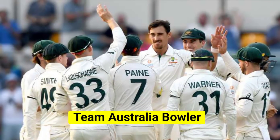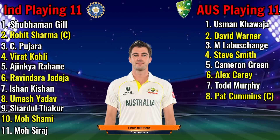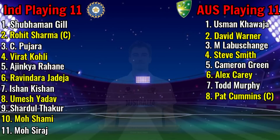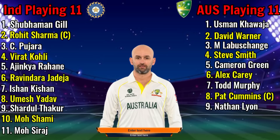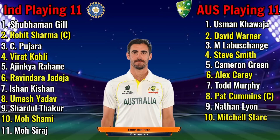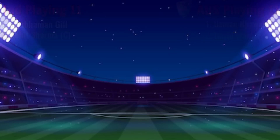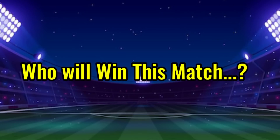Team Australia bowlers: Number 8, Pat Cummings, right-hand fast bowler; Number 9, Nathan Lyon, right-hand spinner; Number 10, Mitchell Stark, left-arm fast bowler; Number 11, Scott Blundane, right-hand fast bowler.